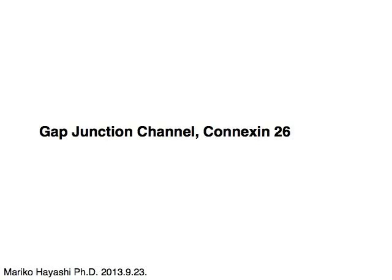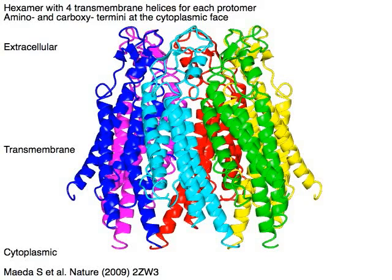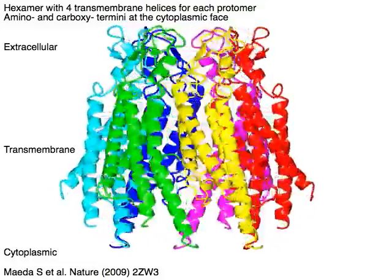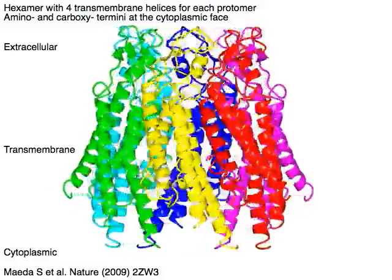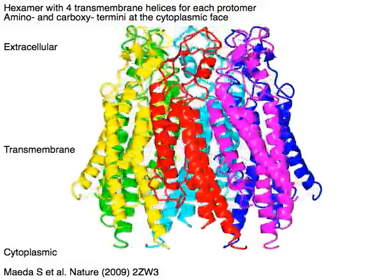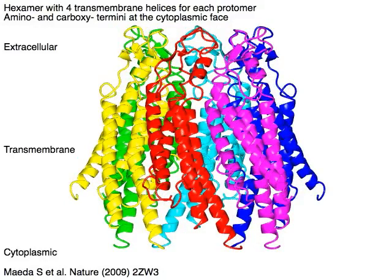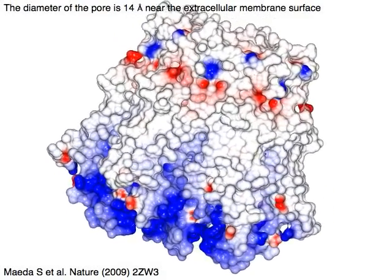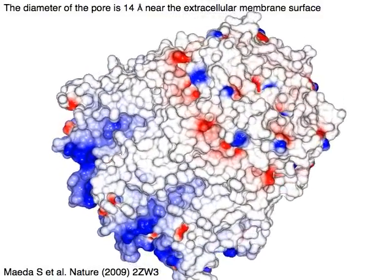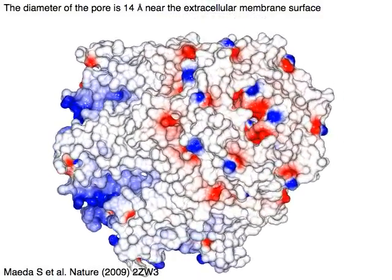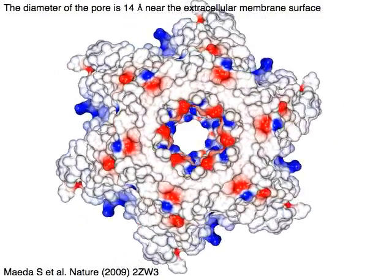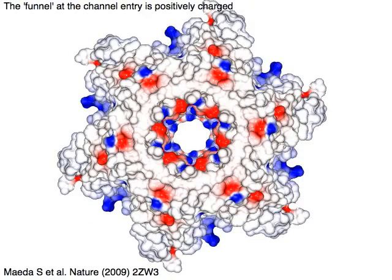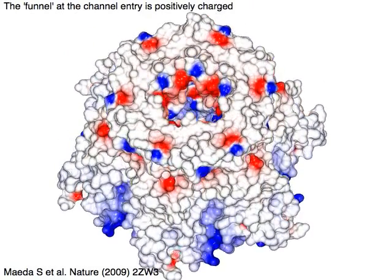Gap junction channel connexin 26 has four transmembrane helices for each protomere, with both amino and carboxy termini at the cytoplasmic face. The diameter of the pore is 14 angstroms near the extracellular membrane surface. The funnel at the channel entry is positively charged.